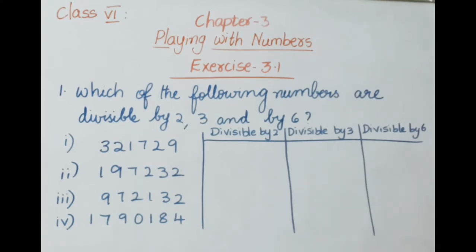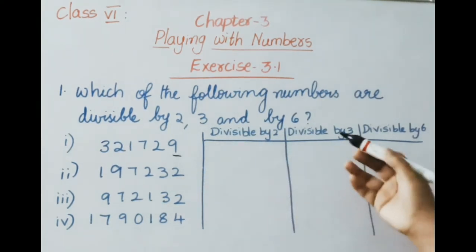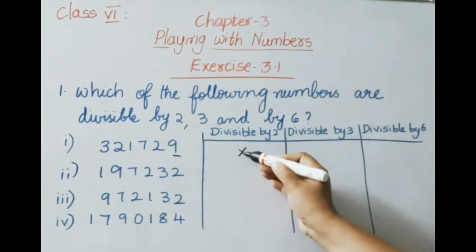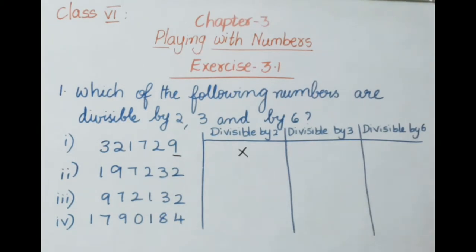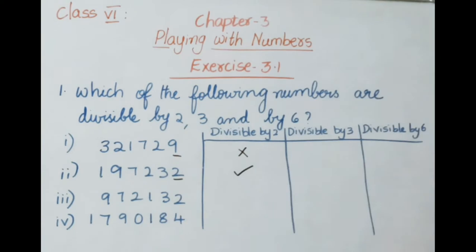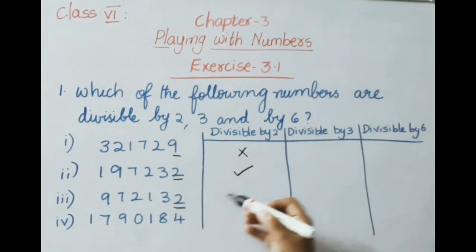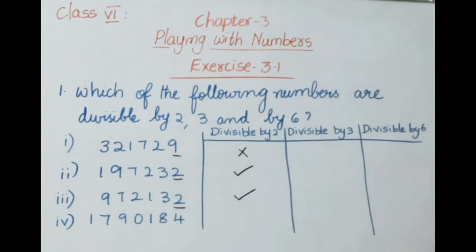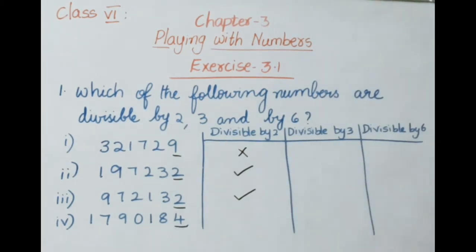Let us check all the numbers. The first number is 3,21,729 — its ones place is 9, so this number is not divisible by 2. The next number is 1,97,232 — ones place is 2, so it is divisible by 2. The next number is 17,90,184 — ones place is 4, so it is also divisible by 2.